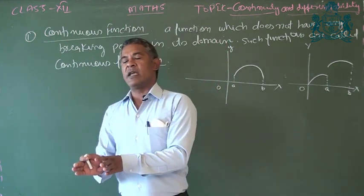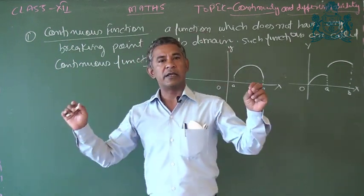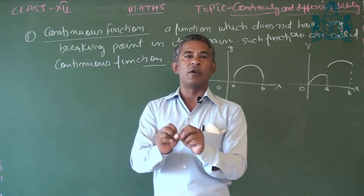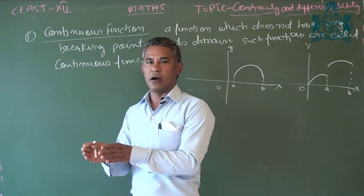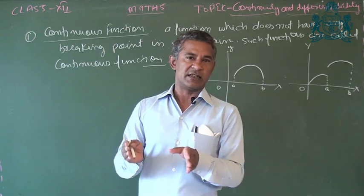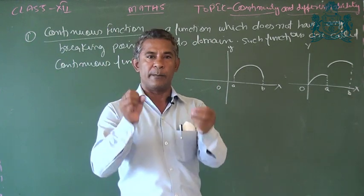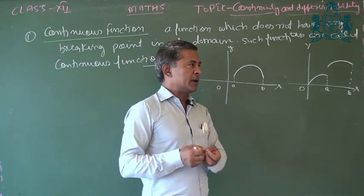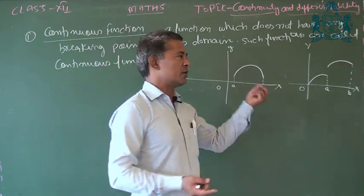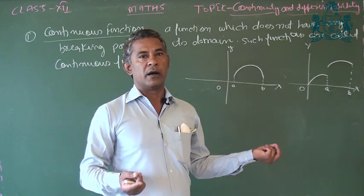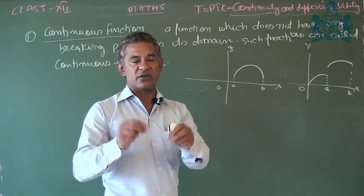Two types of functions are continuous or discontinuous. Continuous means there is no breaking point in the whole graph. If there is a breaking point in the graph, that point is called the point of discontinuity and we call it a discontinuous function.